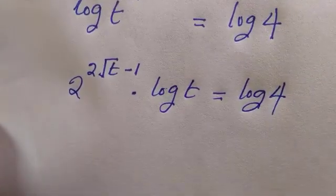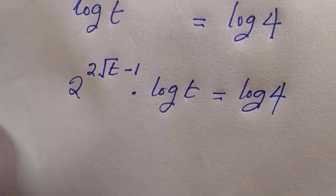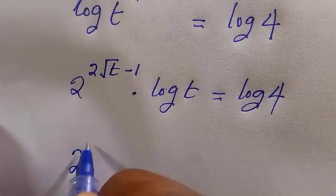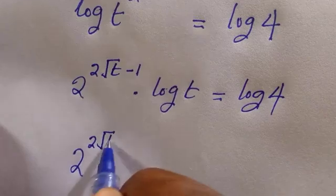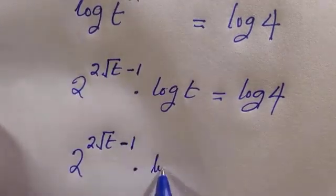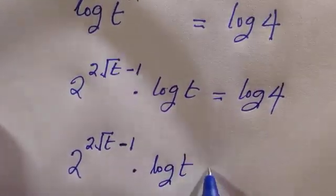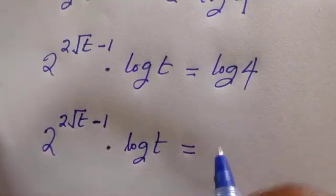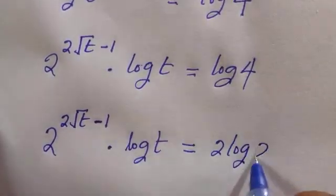For this log 4, if I rewrite it as 2 log 2, we have 2 to the power of 2 root t minus 1 times log t equals 2 log 2.